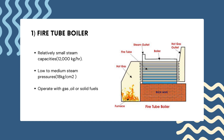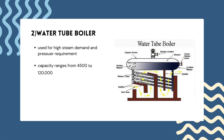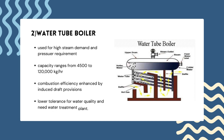Fire tube boilers operate with oil, gas or solid fuels. The second type is the water tube boiler, where water is heated inside tubes and the hot gases surround them — the opposite of a fire tube boiler where hot gases pass through tubes surrounded by water. Water tube boilers are used for high steam demand and pressure requirements. Their capacity ranges from 4,500 to 120,000 kg per hour. Combustion efficiency is enhanced by induced draft provisions, though they have lower tolerance for water quality and require a water treatment plant.